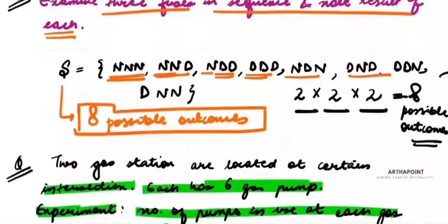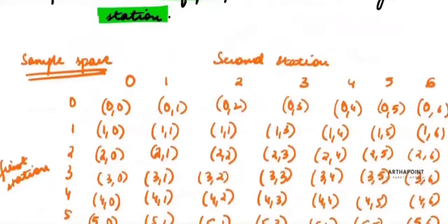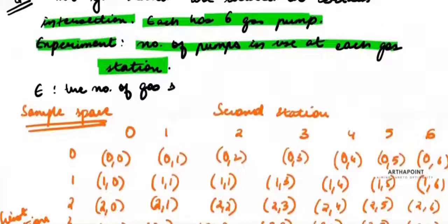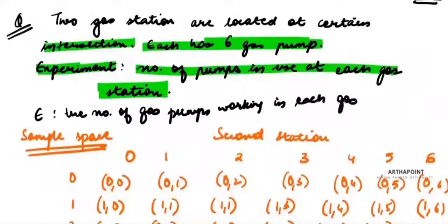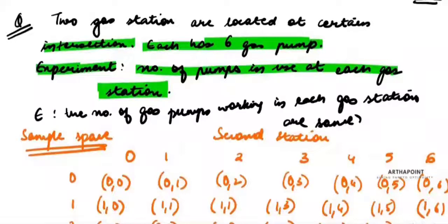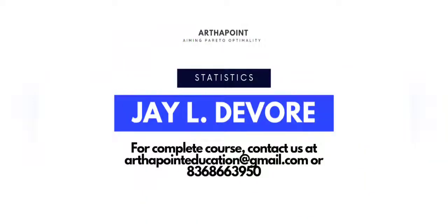For example, going back to the gas pumps example: my event can be the number of gas pumps working in each gas station are the same. So out of the total sample space I built, which are those cases where the gas pumps working in the two gas stations are equal? That subset of the sample space is the event.